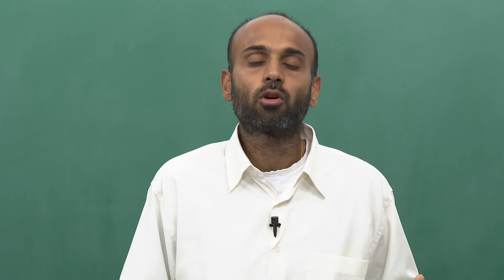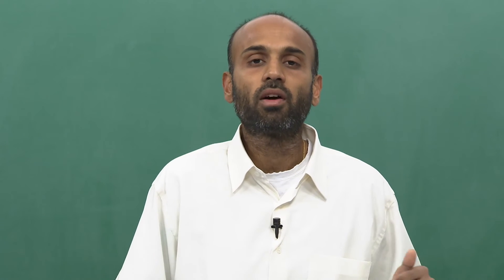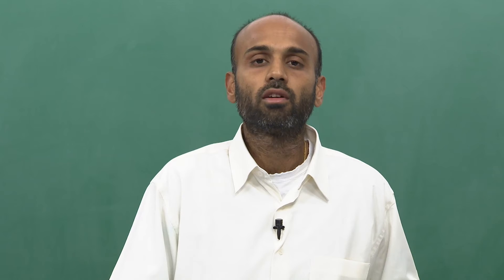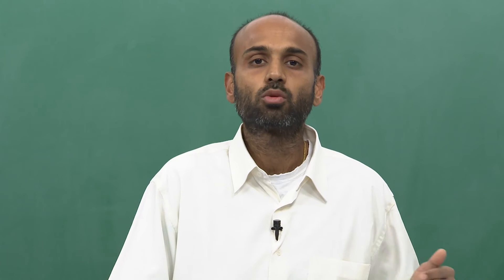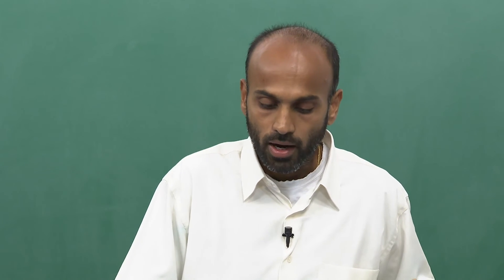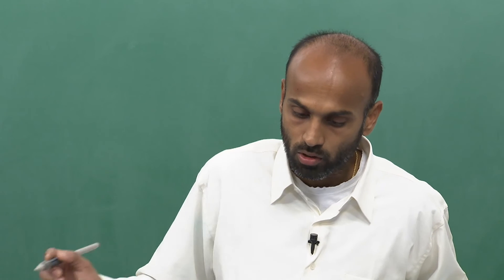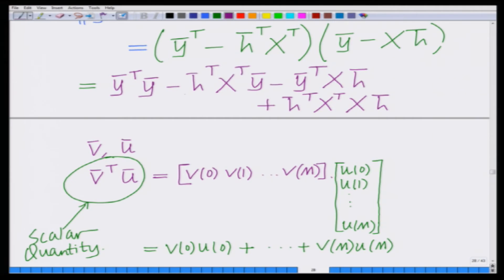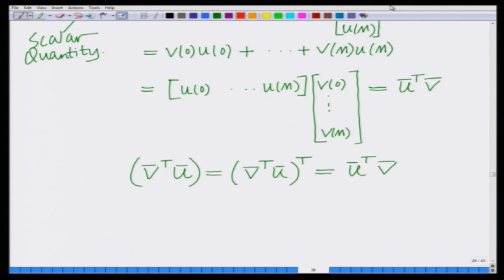We are going to use that property to further simplify the least squares cost function. Looking at the expanded cost function, notice the two terms h̄ᵀXᵀȳ and ȳᵀXh̄ — these quantities are nothing but the transpose of each other.